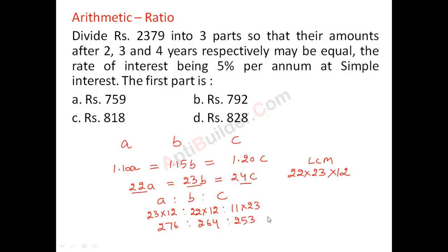So if I calculate the sum of A, B, C. Here. So 276, 6, 4, 10, 3, 13, 3, 1, 7, 8, 6, 14 and 5, 19. 3, 2, 5, 2, 7. It is 7, 93. So how this is related to 23, 7, 9.